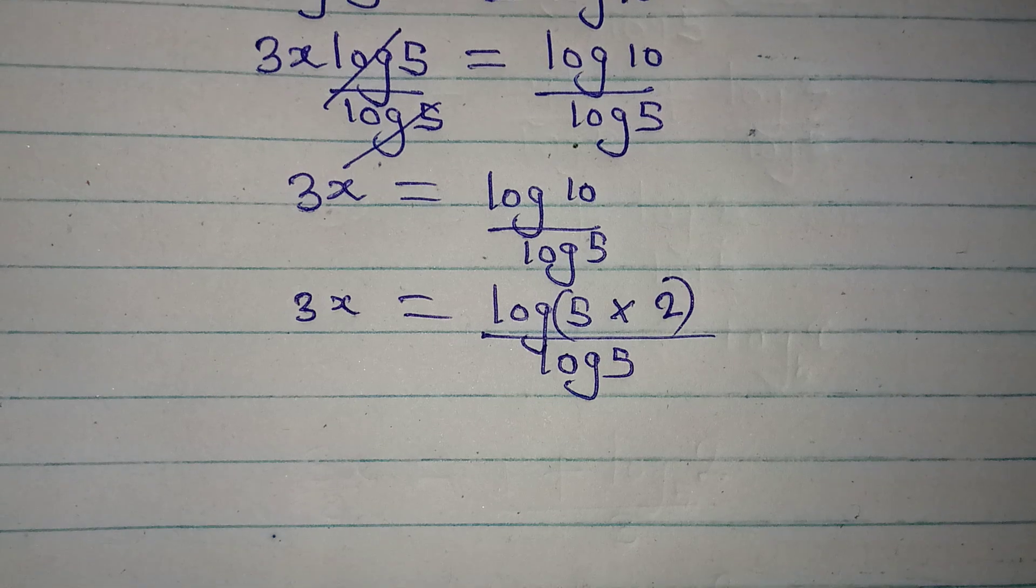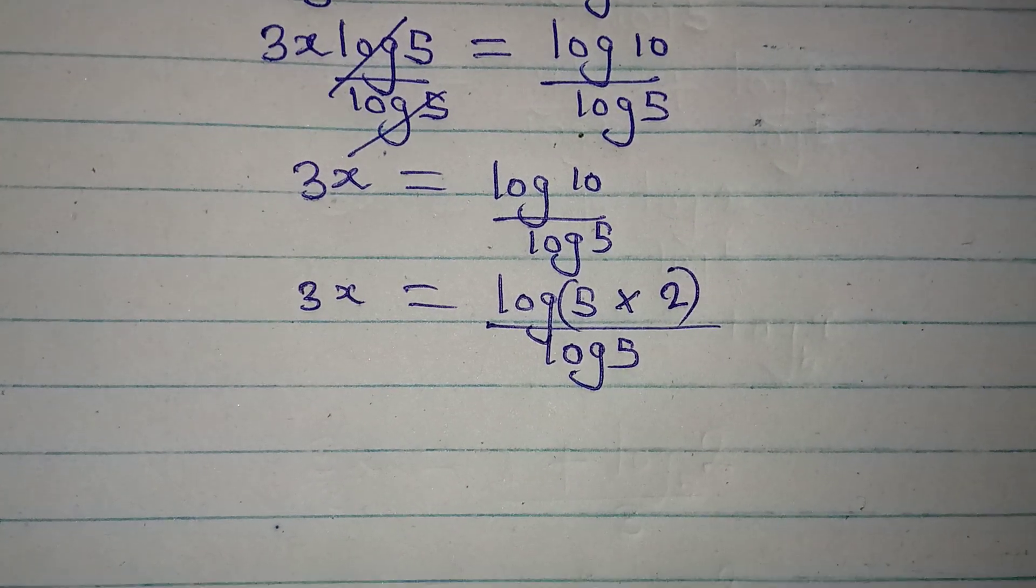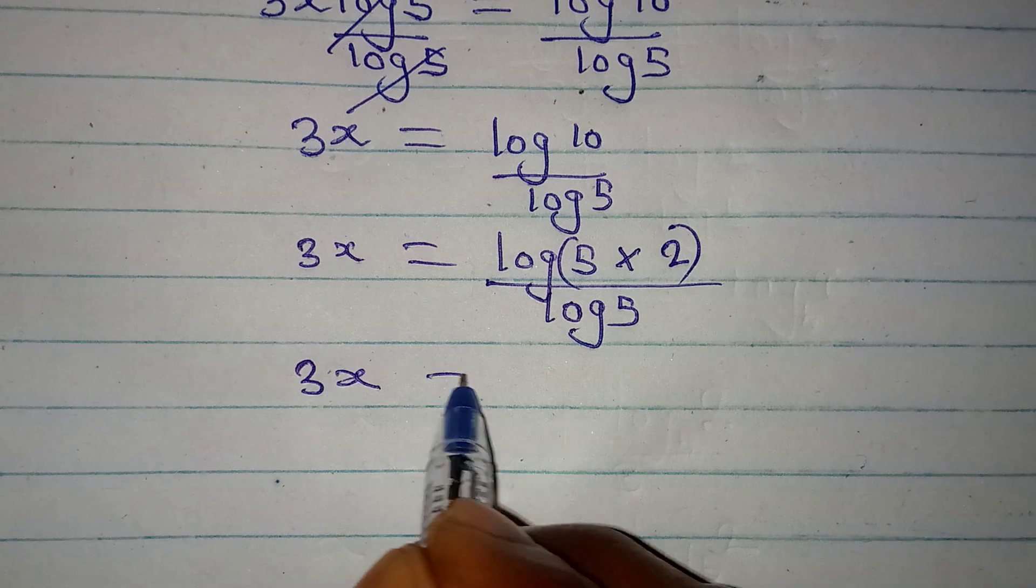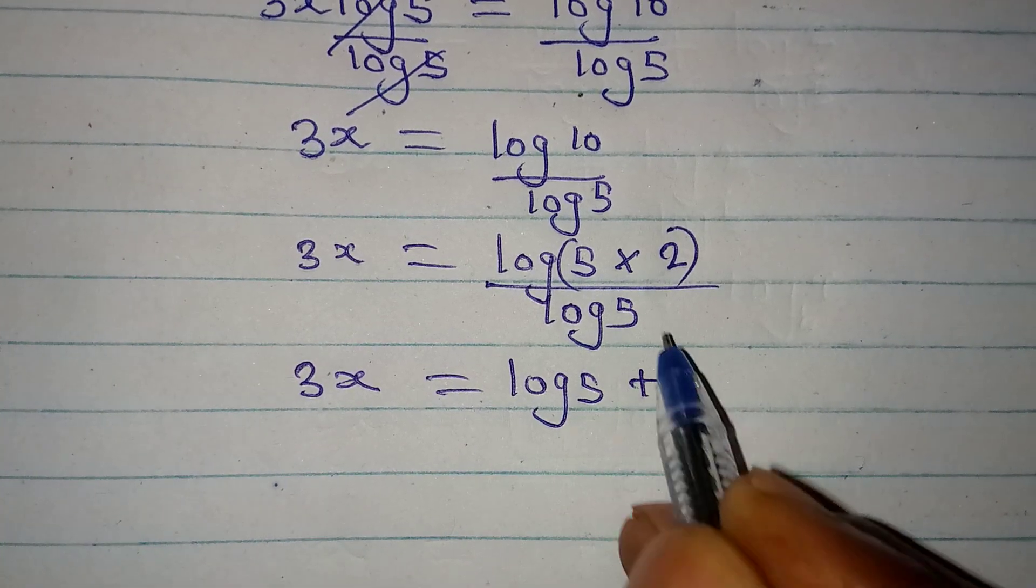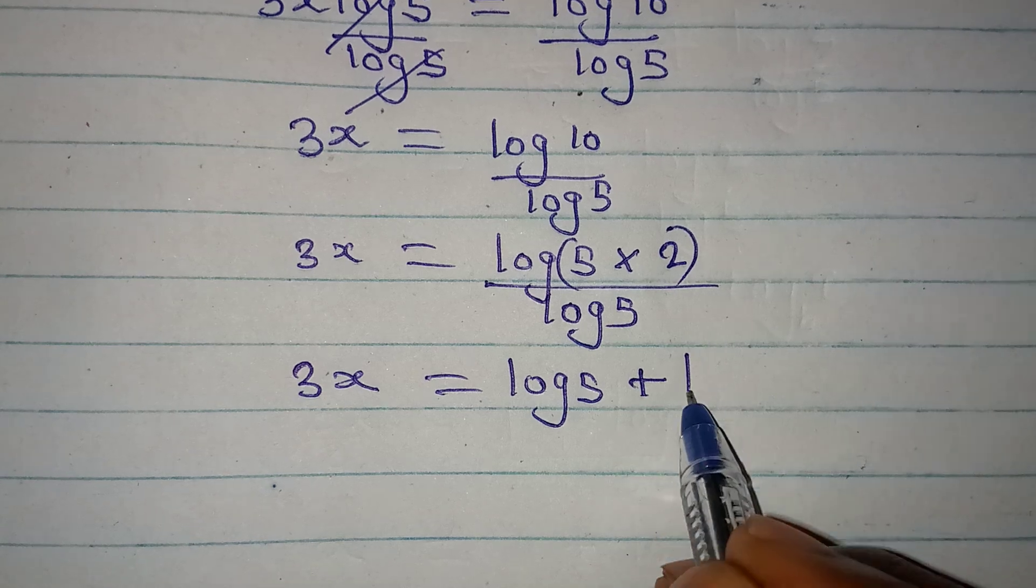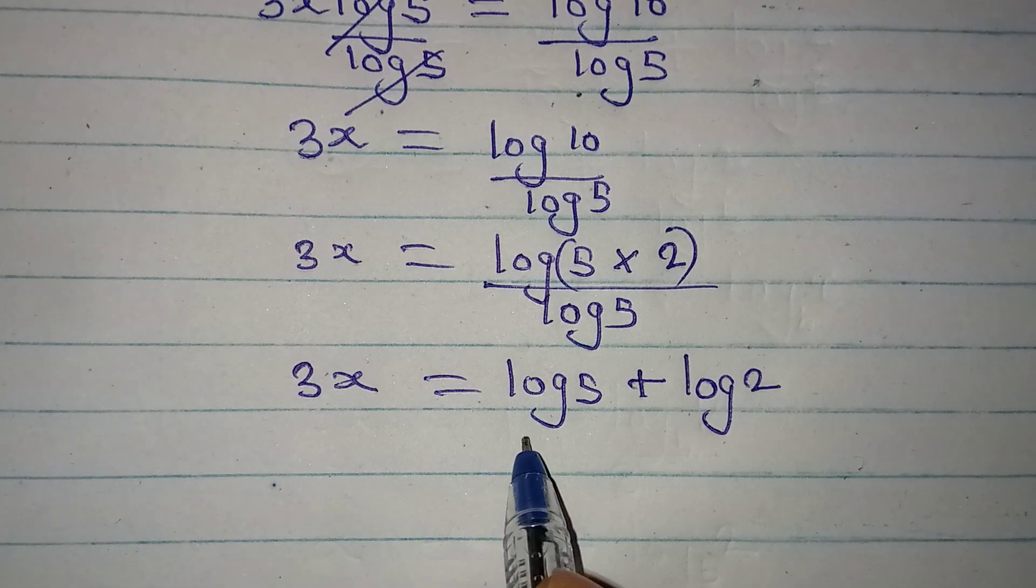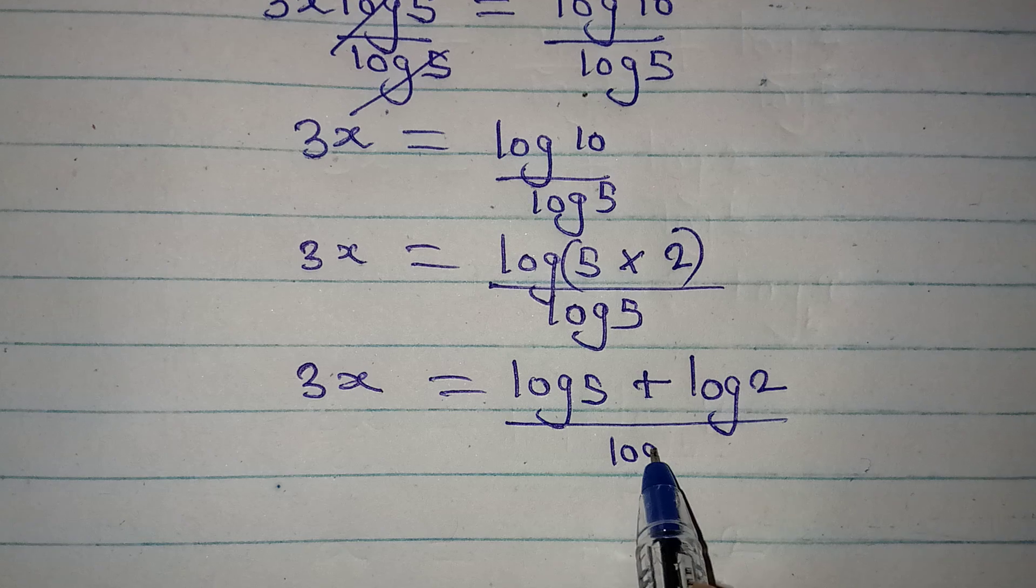Now what can I do? Since I have to multiply this, it means that I will have 3x to be equal to log 5 plus, since I'm multiplying this turns to plus, then we have log 2. The whole of this is over log 5. Now do you also know that this log 5 is for both this and this?